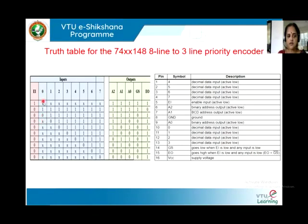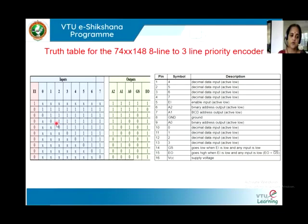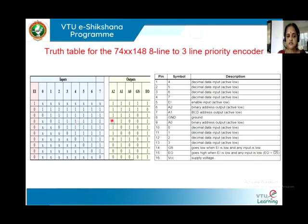When input D0 is enabled and input D1 is also enabled, D1 is of higher priority compared to D0. So D0 has been made don't-care. D1 is active low, and all the inputs above D1 have been made high — meaning whatever the situation on the other inputs, they will not be considered once D1 is active. Anything below D1 will also not be considered. The output according to this condition will be 110.